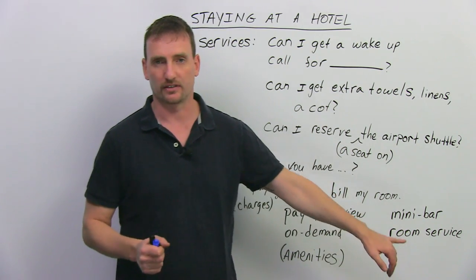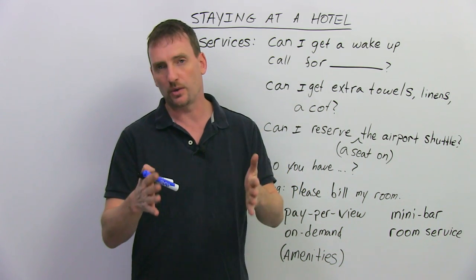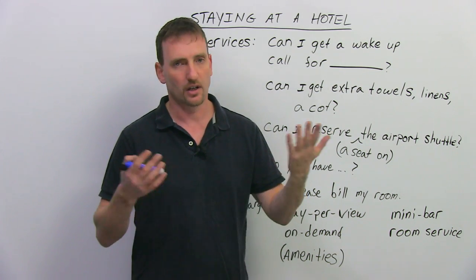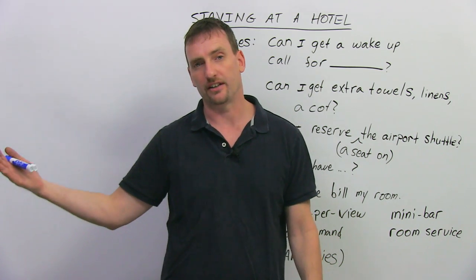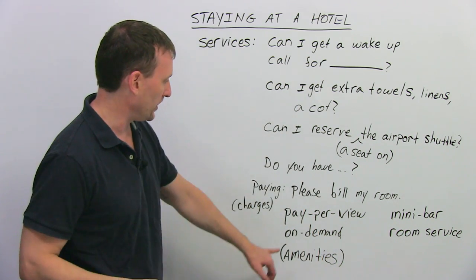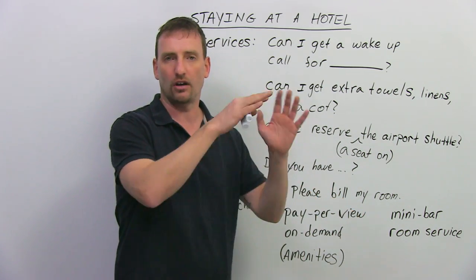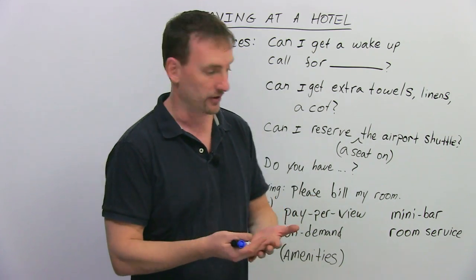If you ordered room service. In a lot of hotels, you can pick up the phone. There's a menu on your desk where the phone is, and you can order food or drinks or whatever you need, and they will bring it to your room, and then you will pay for it later. You can pay for it then, or you can just tell them, please bill my room. It means put the charge on the room, and when I check out, I will pay everything together.